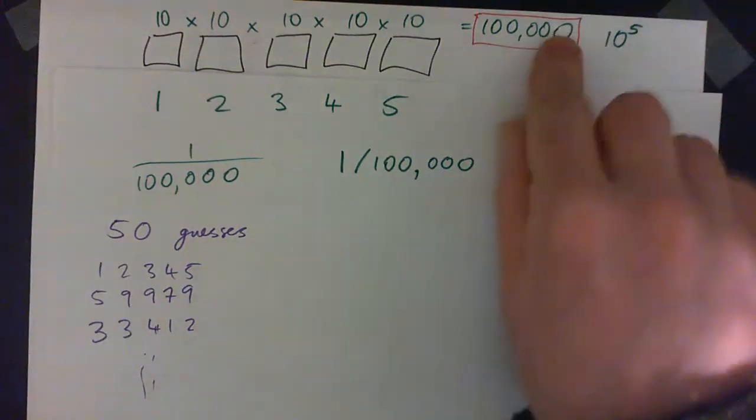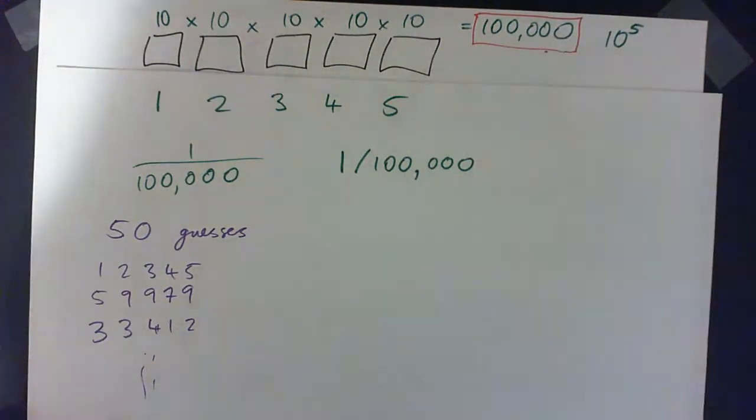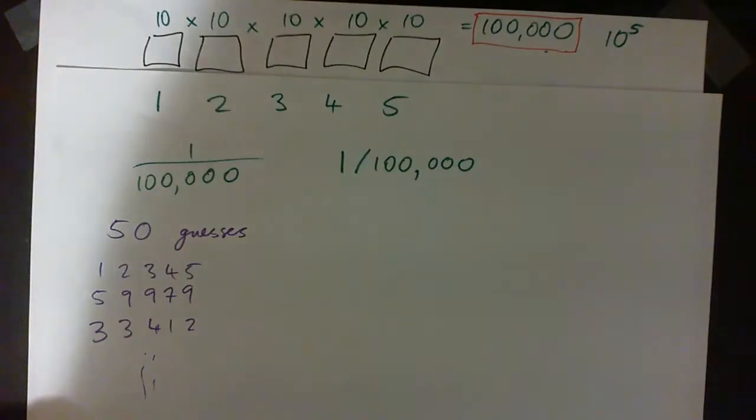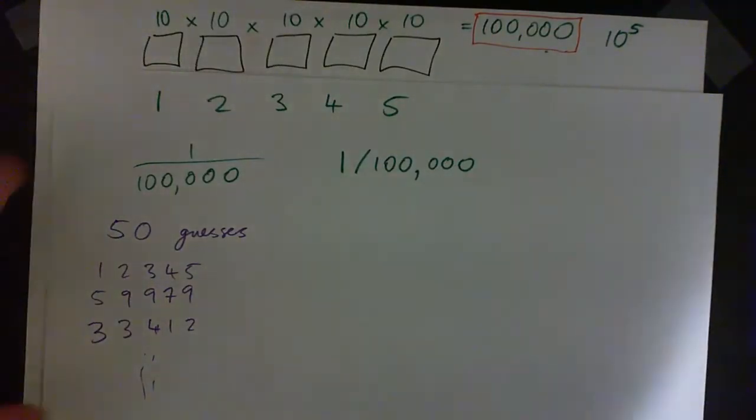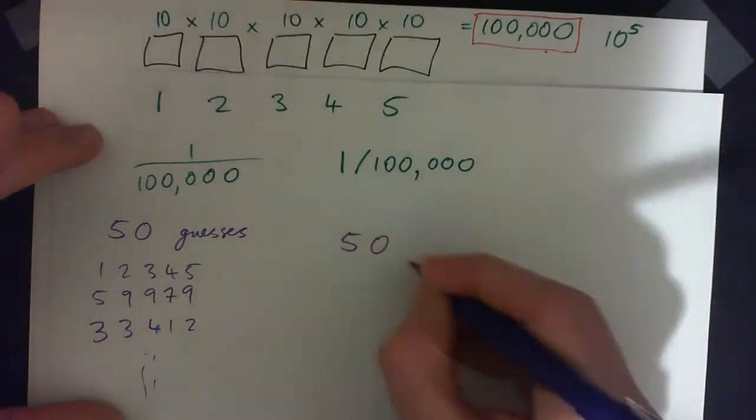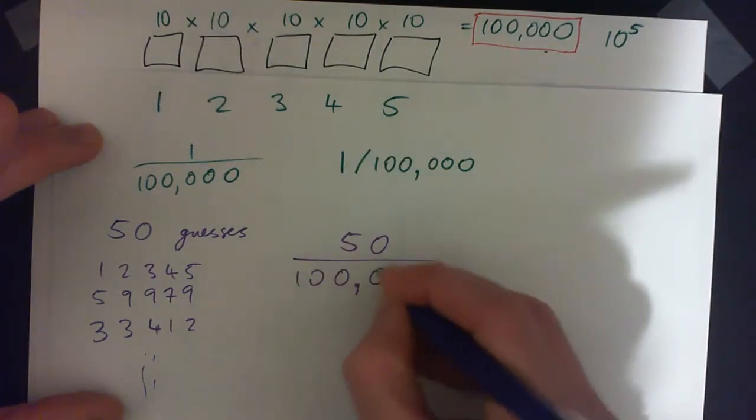But there are 100,000 possible combinations on the lock. So 50 out of 100,000 are your chances here, 50 out of 100,000.